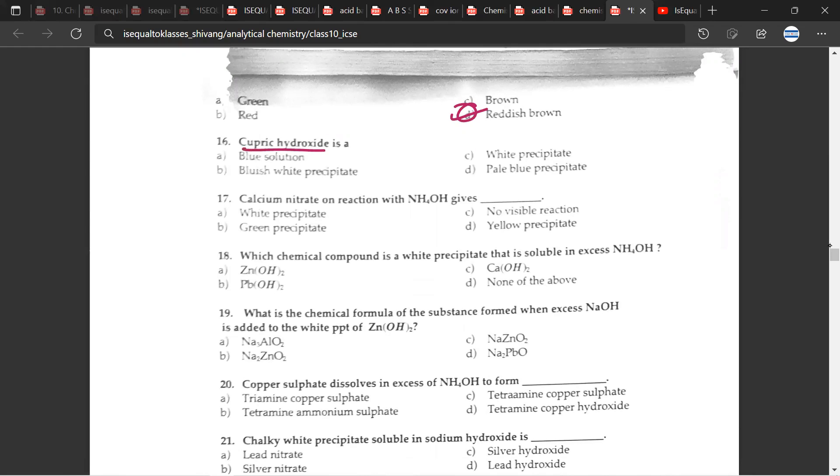Cupric hydroxide is a, so this would be the pale blue precipitate. Calcium nitrate on reaction with NH4OH gives dash. So in reaction, there's no visible reaction. Which chemical compound is a white precipitate that is soluble in excess NH4OH? So this would be zinc hydroxide.